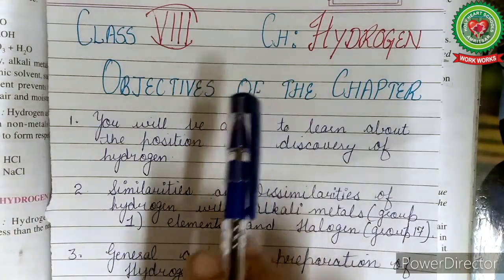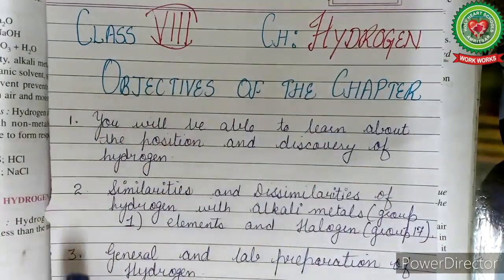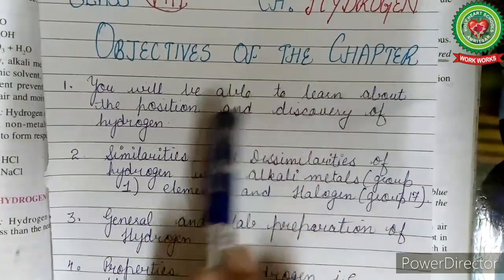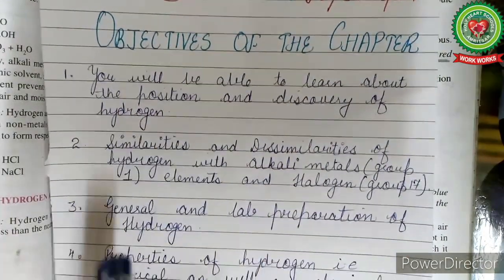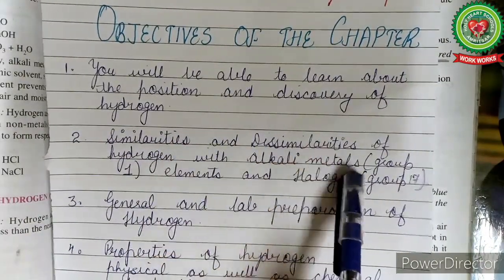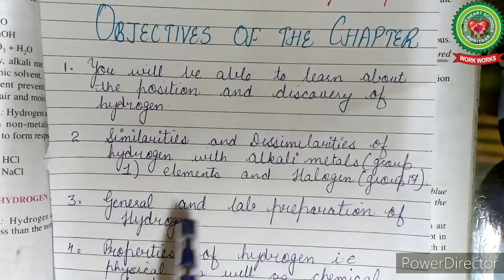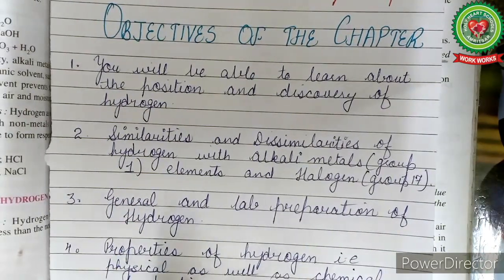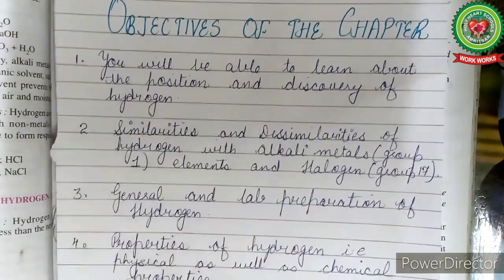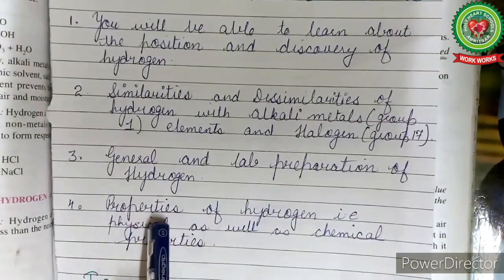Good morning students. Today we are going to start our new chapter: the study of the first element, hydrogen. The objectives of the chapter are: first, you will learn about the position and discovery of hydrogen; second, similarities and dissimilarities of hydrogen with alkali metals (Group 1 elements) and halogens (Group 17 elements), since hydrogen shows a dual nature resembling both; and third, general and lab preparation of hydrogen and its properties.